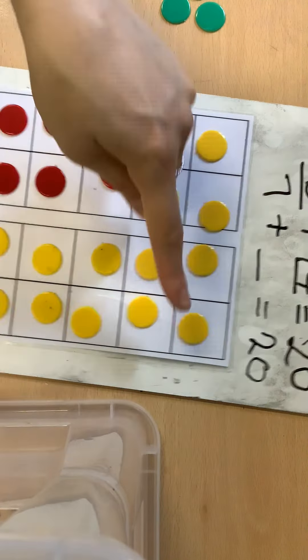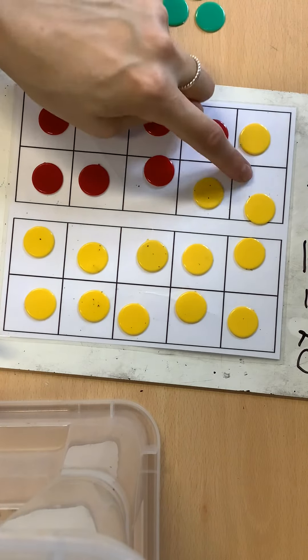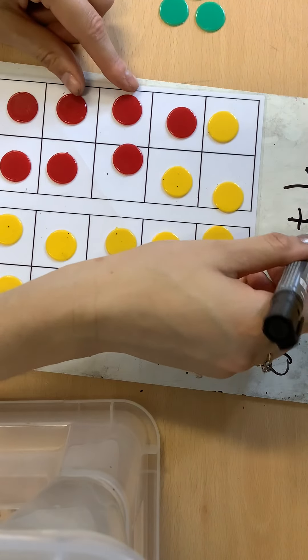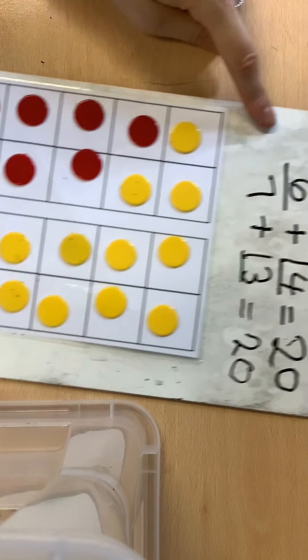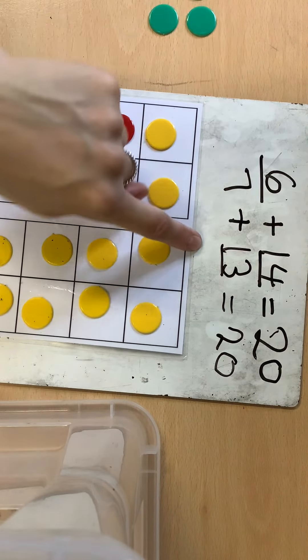And I have 10, 11, 12, 13 yellow counters. So I found another number bond to 20. Seven and 13 make 20.